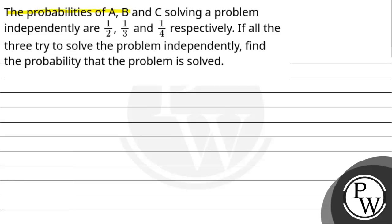So let us read this question. The probabilities of A, B and C solving a problem independently are 1 by 2, 1 by 3 and 1 by 4 respectively. If all the three try to solve the problem independently, find the probability that the problem is solved.